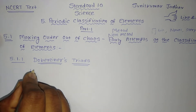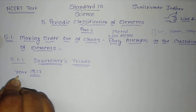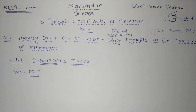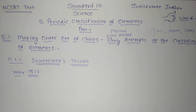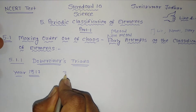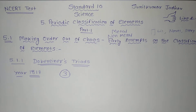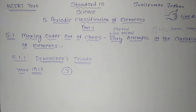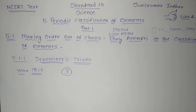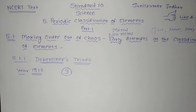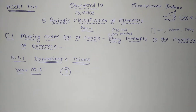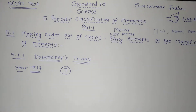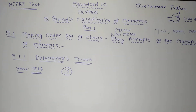In the year 1817, Dobereiner, a German chemist, tried to arrange elements with similar properties into groups. He identified some groups having three elements each, so he called these groups triads. Dobereiner showed that when the three elements in a triad were written in order of increasing atomic masses, the atomic mass of the middle element was roughly the average of the atomic masses of the other two elements. Let us learn this with examples.